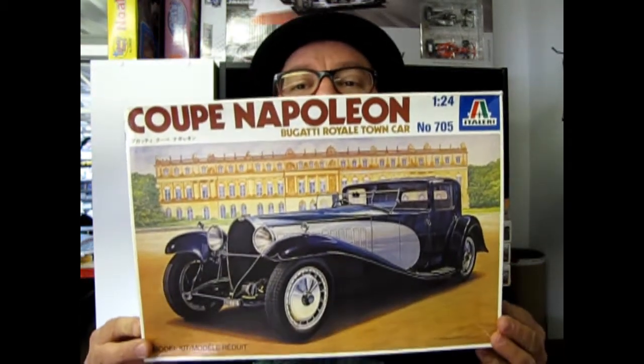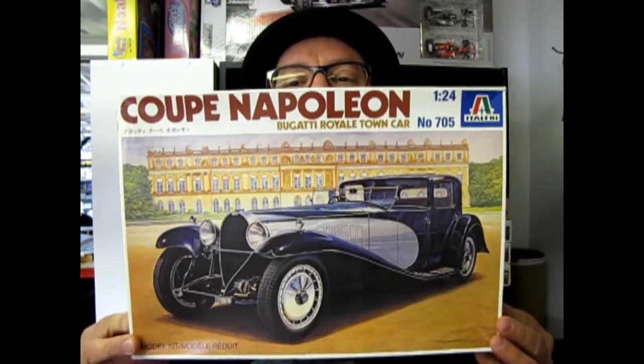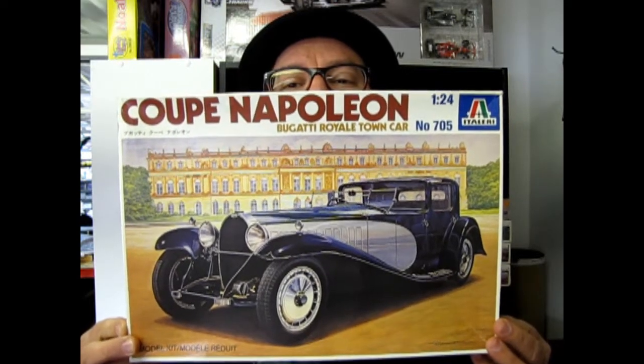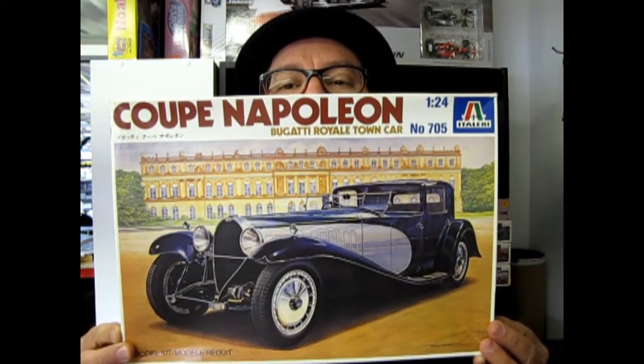Hello everybody, my name is Trevor Selescu and I'm the owner of Monster Hobbies in High River, Alberta, Canada. Tonight, I've got an interesting kit for you on What's in the Box. This is the 1927 Bugatti Coupe Napoleon by Italieri in 1:24 scale.